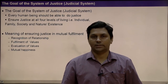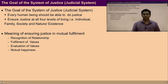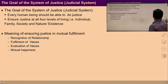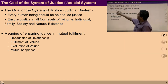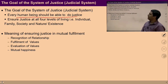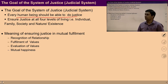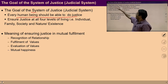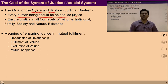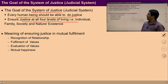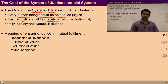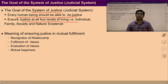First we will talk about the goal of the system of justice. Every human being should be able to do justice — this is the primary goal of a judicial system. The main role of this system of justice is to ensure the ability to live with justice in everyone, or ensure justice at all four levels of living.